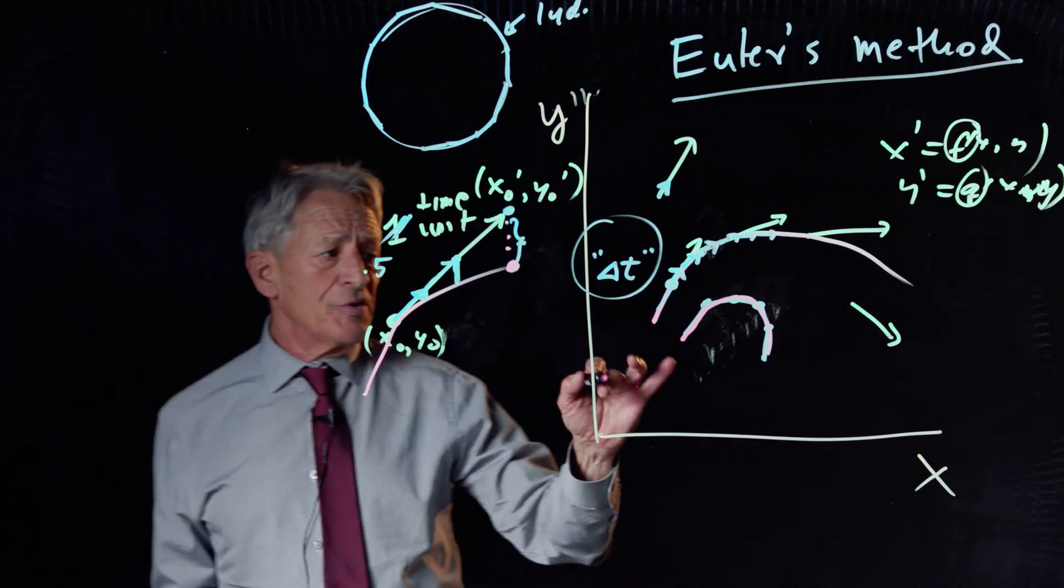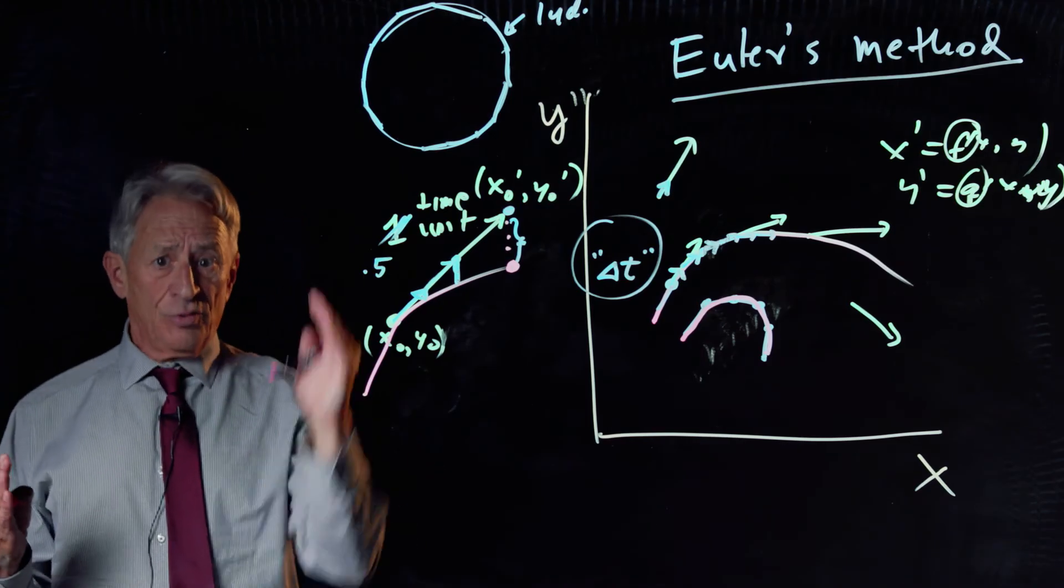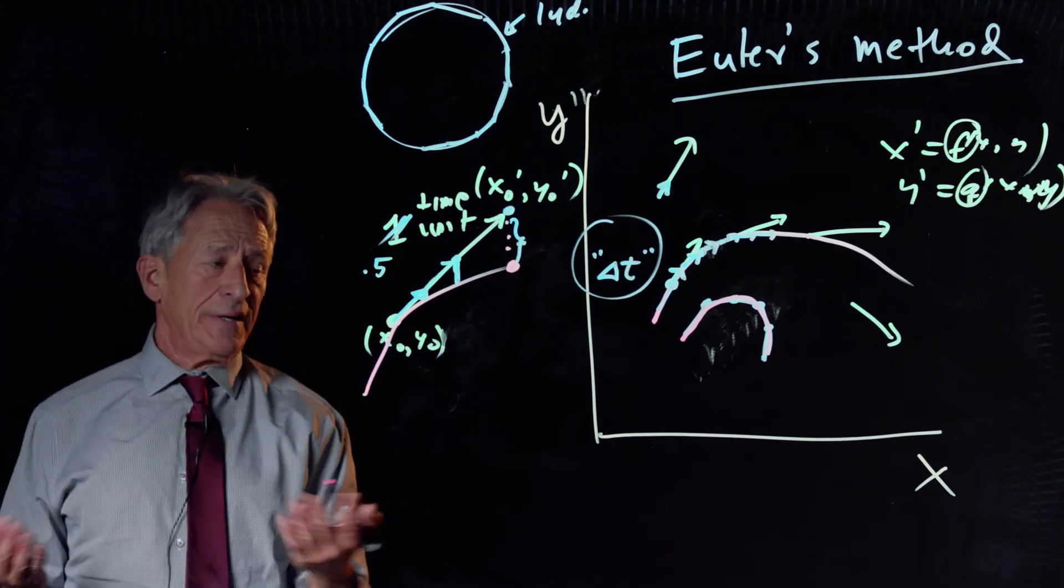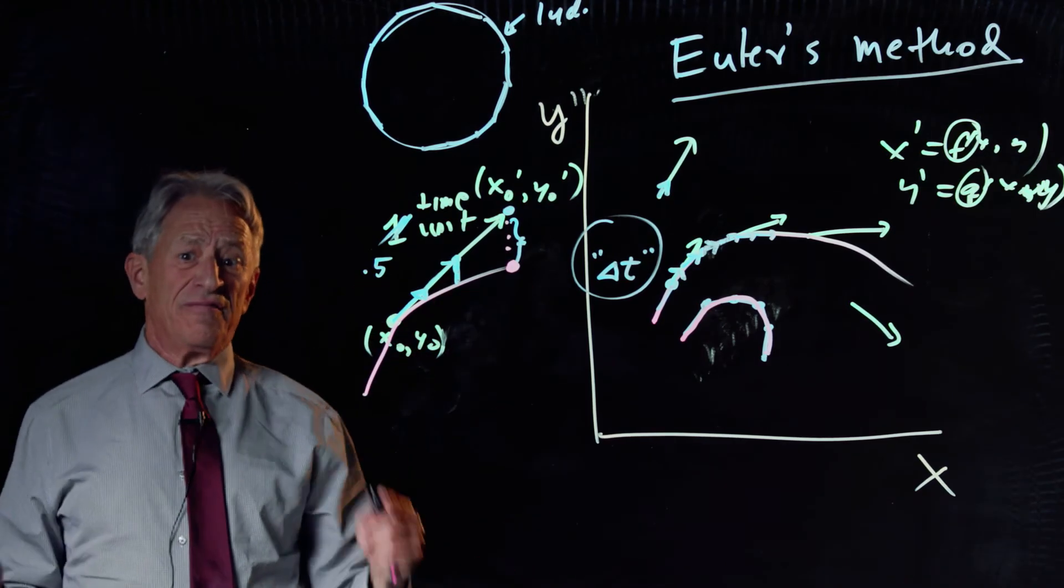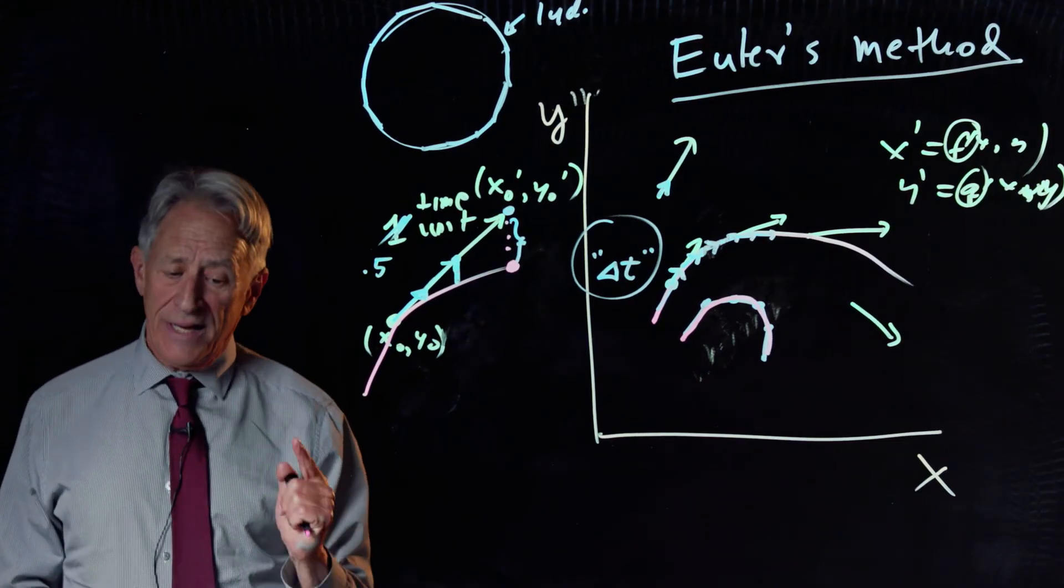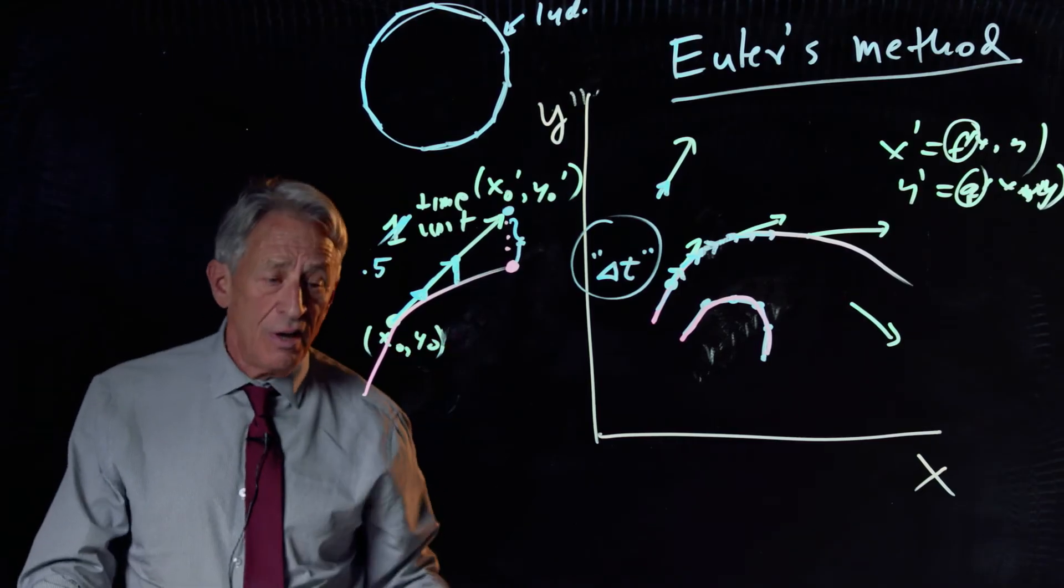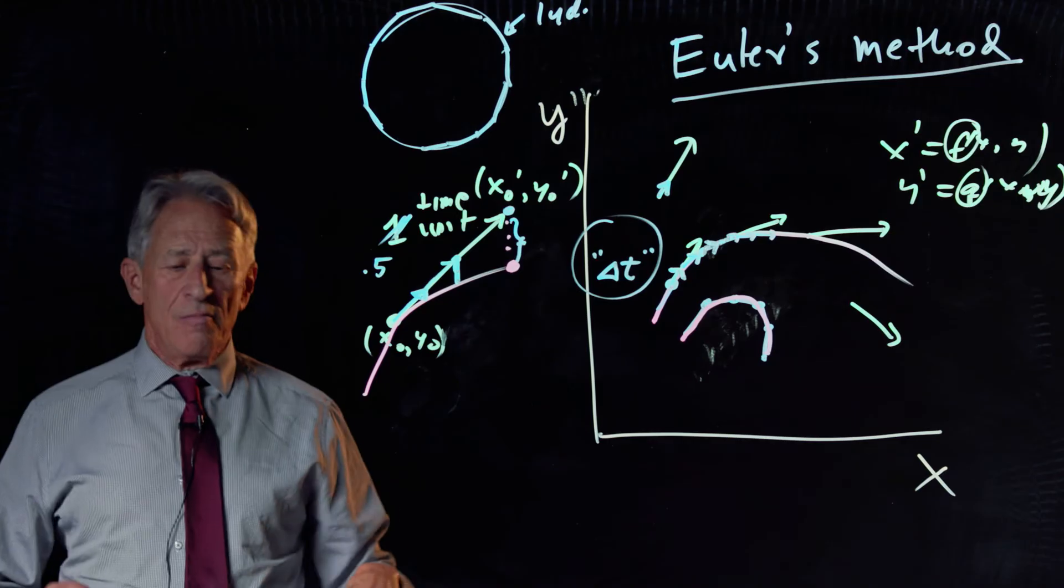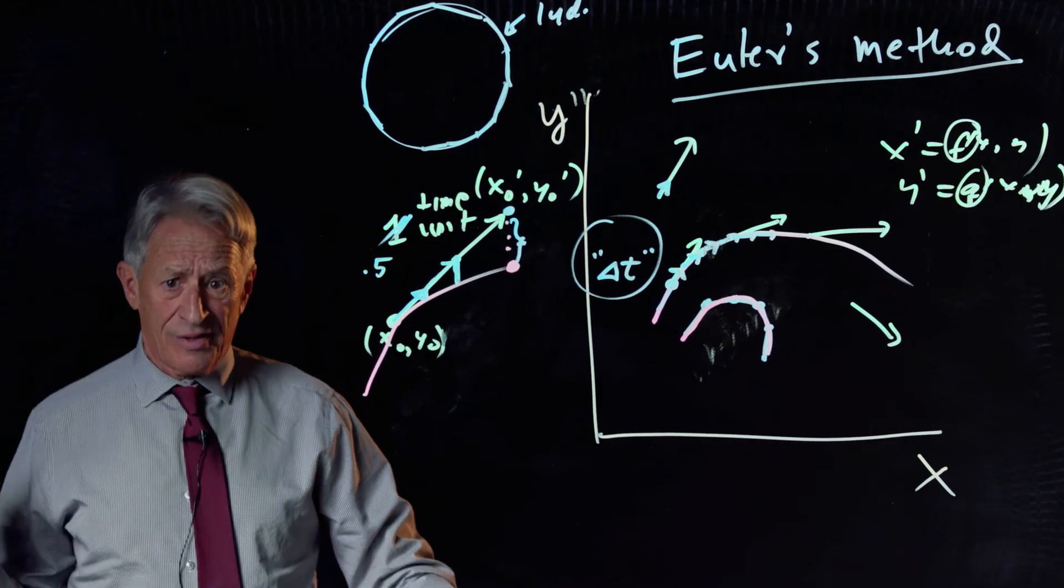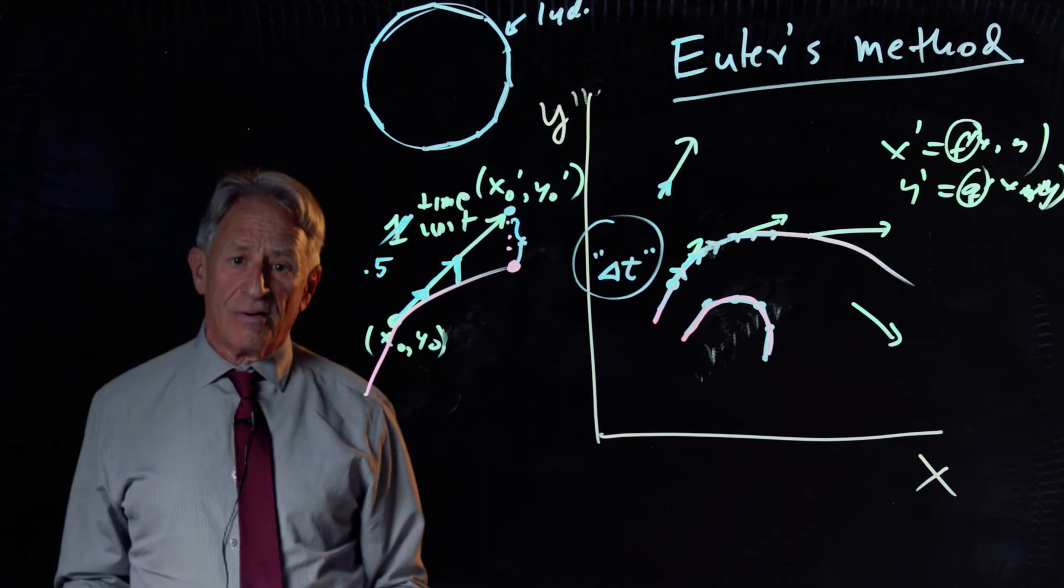So Euler's method gives us a method for absolutely plotting and calculating the trajectory of any model. And by any model, I mean any model. Sharks and tuna, 57 variable models, million variable models like we do in our cardiac work. It doesn't matter.